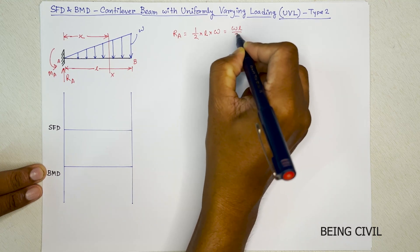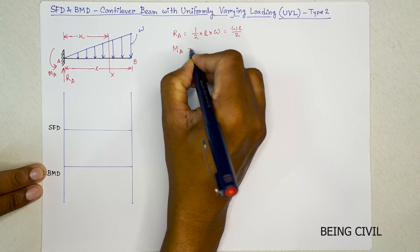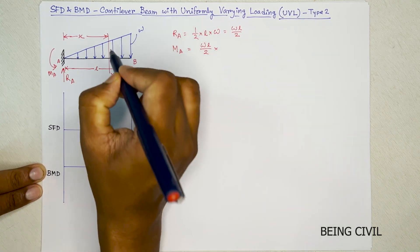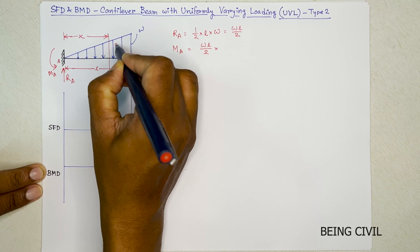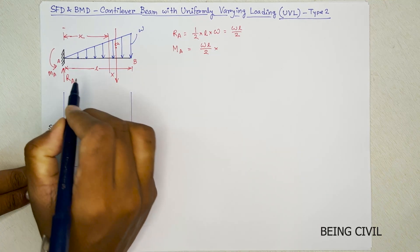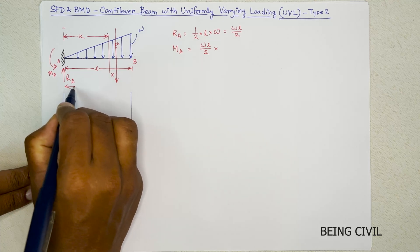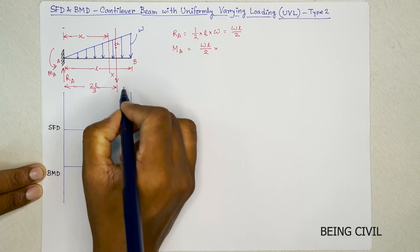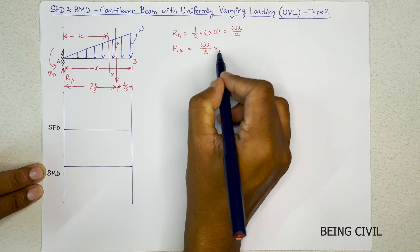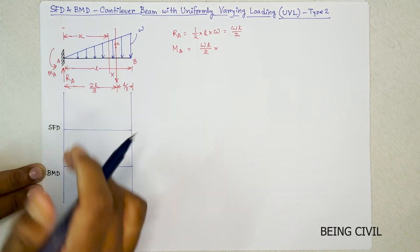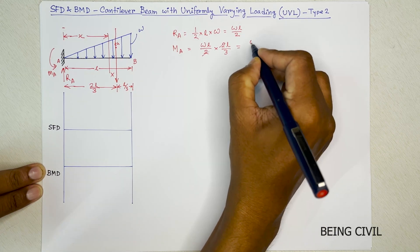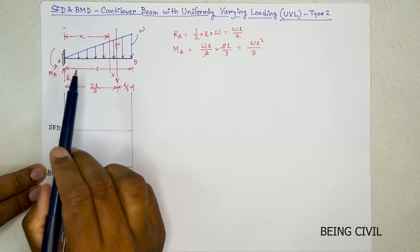The moment MA equals the total load times the CG distance. The total load acts through the CG, which divides the triangle in 2:1 ratio, so the CG distance from the fixed end is 2l/3, and the distance from the free end is l/3. Therefore MA equals the total load wl/2 times 2l/3, giving MA = wl²/3.